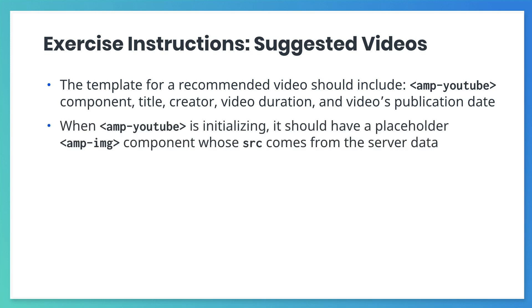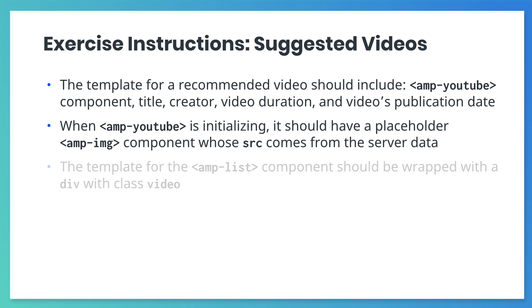While AMP YouTube is initializing, it should show a placeholder AMP image thumbnail whose URL comes from the server data. Wrap the template for the AMP List component in a div with class video.